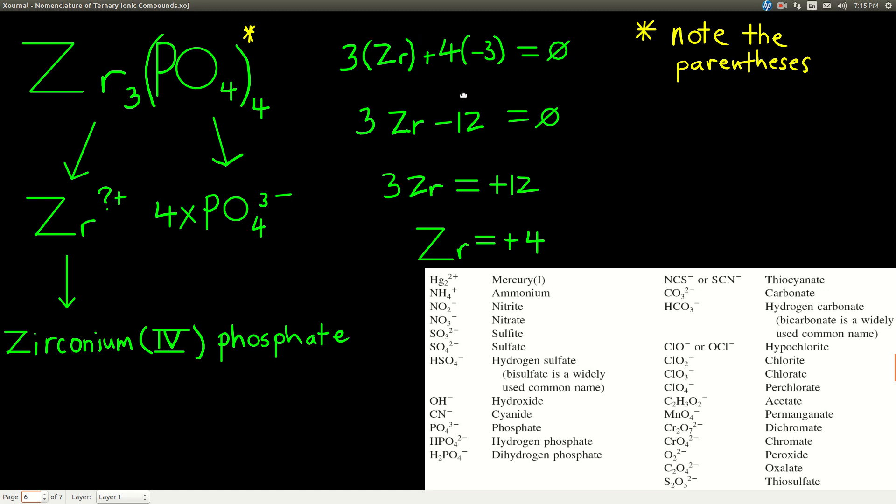Or if we use the little formula, there's 3 times the charge on zirconium plus 4 times the negative 3 on each one of the phosphates adds up to zero. 3 times the charge on zirconium minus 12 equals 0. 3 times the charge on zirconium equals positive 12. Or the charge on zirconium is positive 4. It's still giving us zirconium four phosphate.